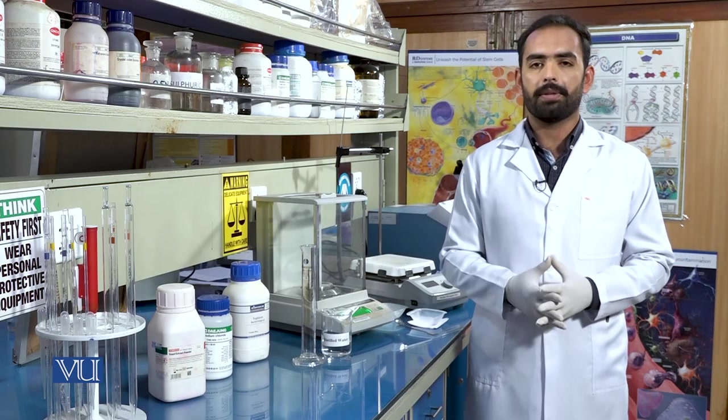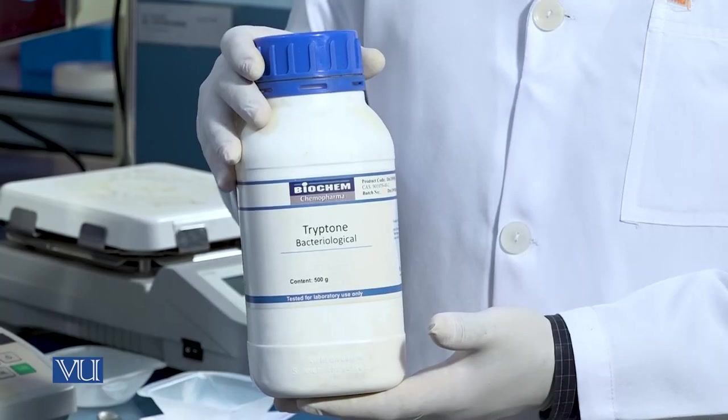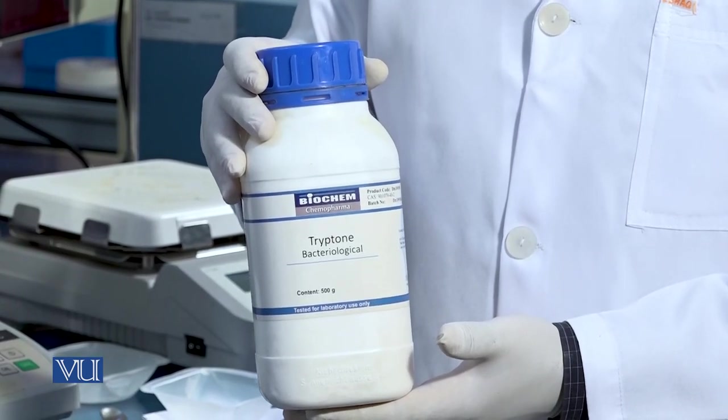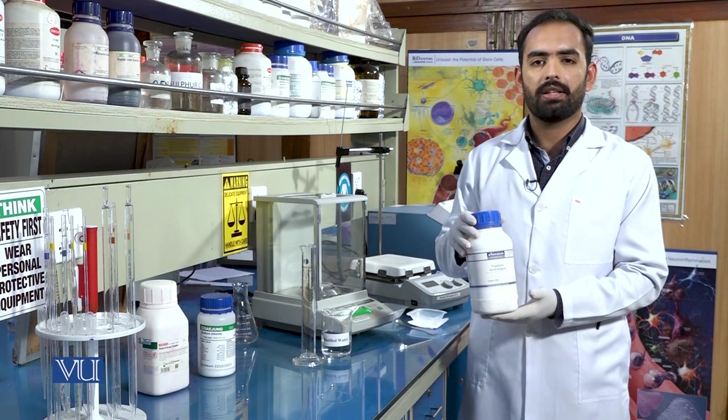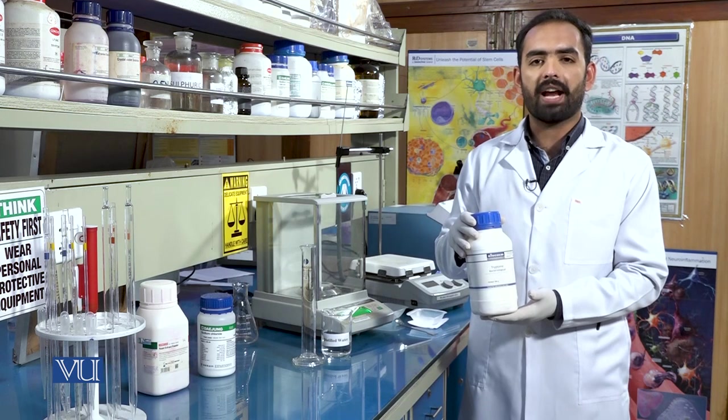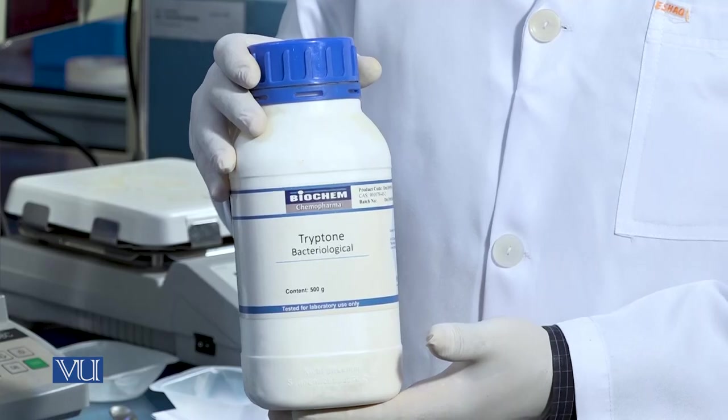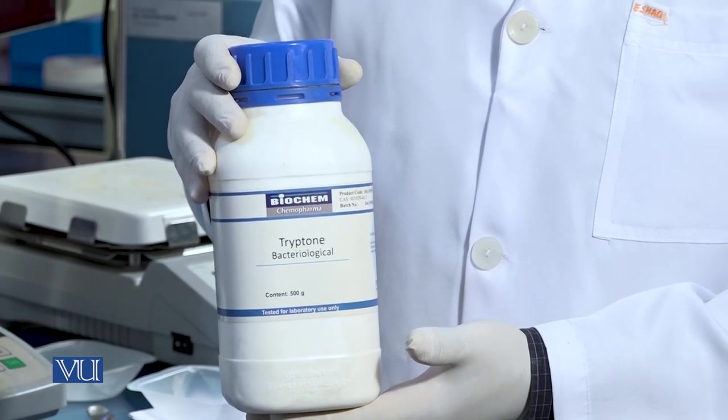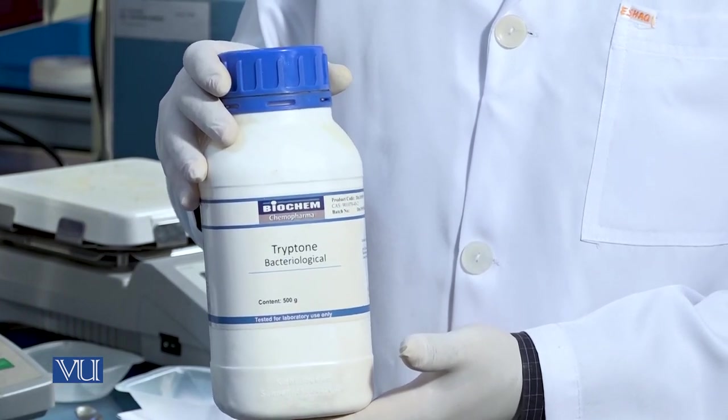Let's go to the recipe. Tryptone is a digest of a protein known as casein that is most abundantly present in milk. Tryptone serves as a source of amino acid residues for bacteria.